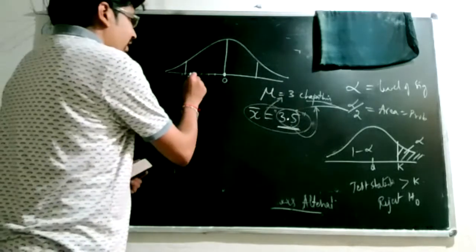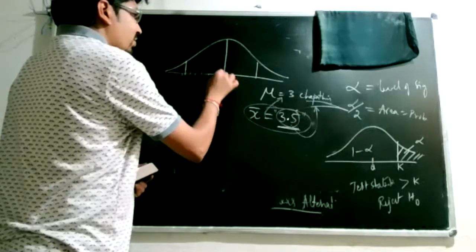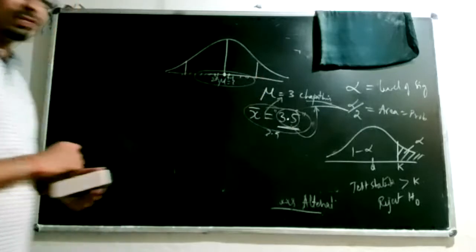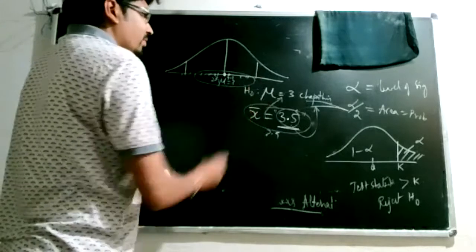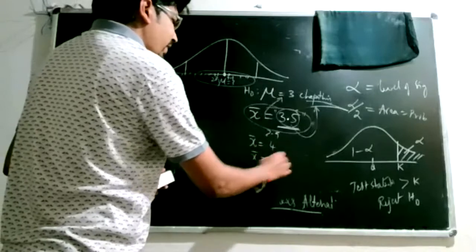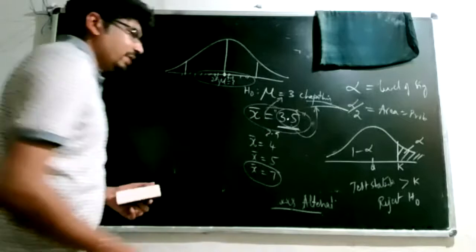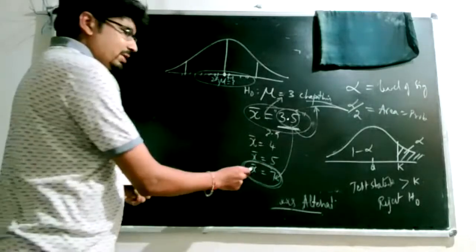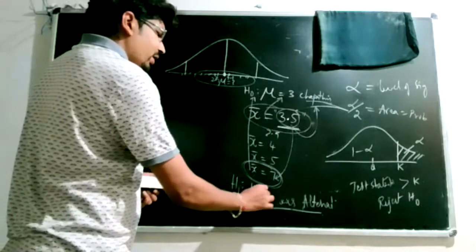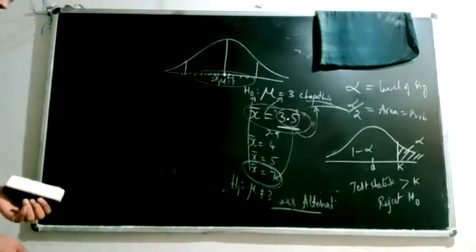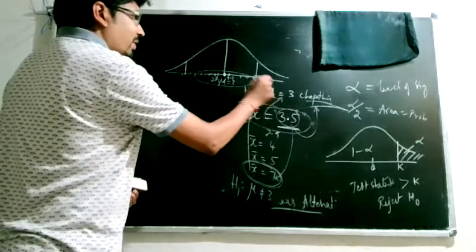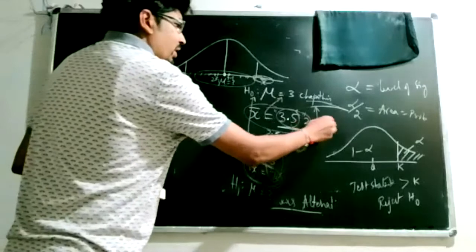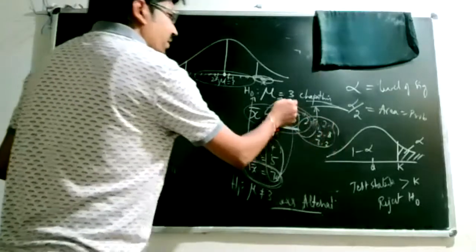We test whether the observed value is the actual value or just a random deviation. If mu equals 3, values like x-bar = 3.1, 2.9, or 2.7 are all favorable for the null hypothesis. But if x-bar equals 4, 5, or 7, those values cannot reasonably occur occasionally and favor the alternative hypothesis — greater than, less than, or not equal to 3.